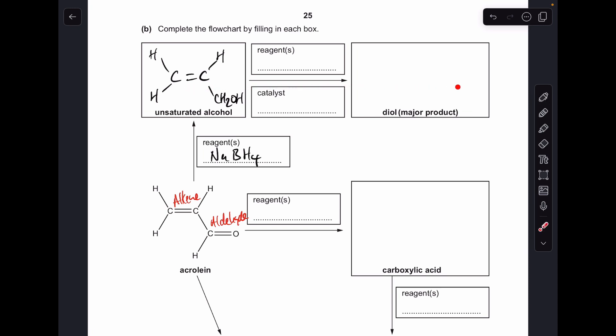Now moving on to this part. We've got to turn the unsaturated alcohol into a diol and give the structure of the major product. Diol just means two alcohol groups. We've already got one. So we need to react the alkene functional group with something, and that something is steam and an acid catalyst.